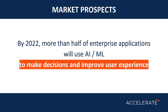What's in the future? Researchers believe that by 2022, more than half of enterprise applications will use AI or ML to a certain extent. Some organizations will utilize these elements more and some less, but it's expected that half of enterprises will use AI and ML to make decisions and improve user experience. Knowing that and knowing the advantages, let's now take a look at how this stuff actually works.